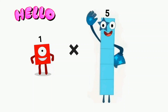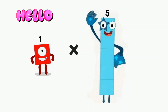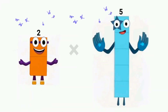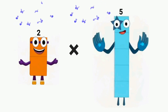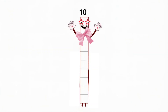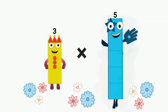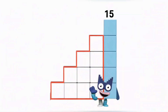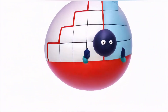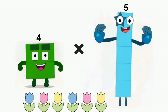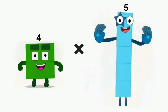1 times 5 equals 5. 2 times 5 equals 10. 3 times 5 equals 15. 4 times 5 equals 20.